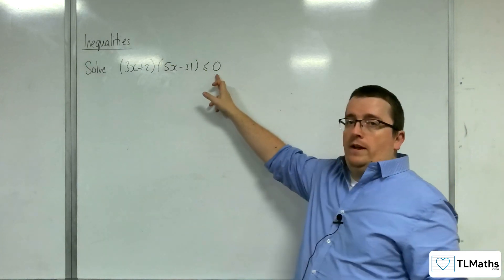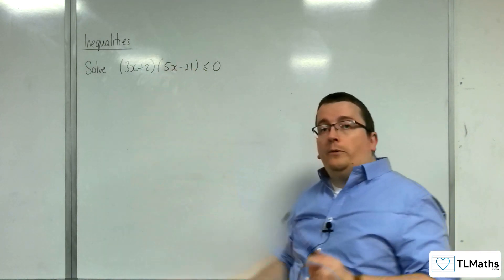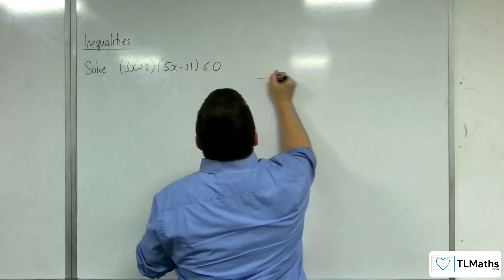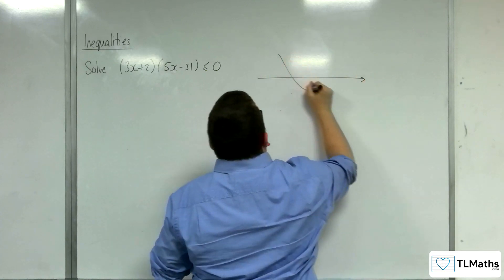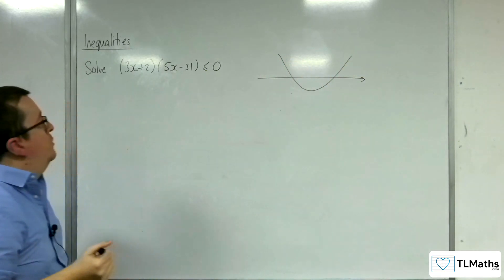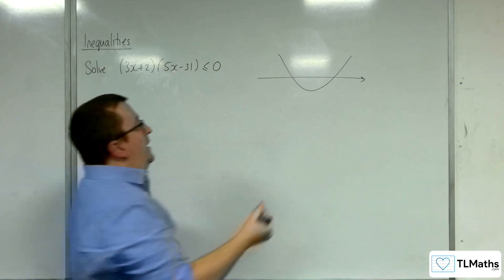We've already got 0 on the right-hand side. It's already factorised, so I can go straight in to sketch the curve, which will be a parabola that's going through two points on your x-axis.